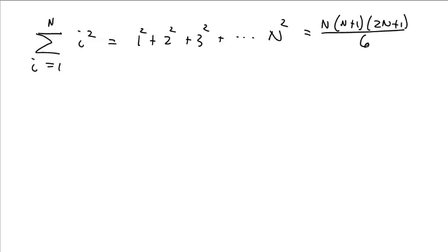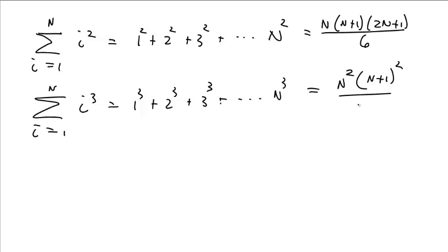But anyway, if you sum i equals 1 up to n and they're i squared, you're taking 1 squared plus 2 squared plus 3 squared plus all the way up to n squared. That is going to be n times n plus 1 times 2n plus 1 all divided by 6. And if you sum up i equals 1 up to n i cubed, that is 1 cubed plus 2 cubed plus 3 cubed and so on up to n cubed. You get n squared times n plus 1 squared all over 4.